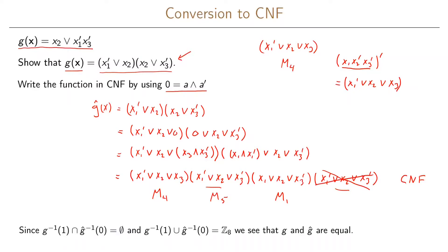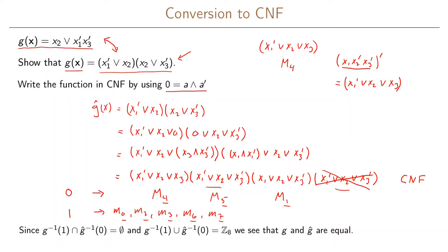Remember that what we wanted to show was that these two expressions are equal. Previously for the disjunctive normal form, we found the minterms m0, m2, m3, m6, and m7. We can now compare these min terms with our max terms. The max terms point to zeros in the function and the min terms point to ones. Looking at the indices, we see no index appears in both the min terms and max terms.